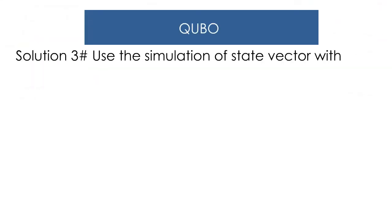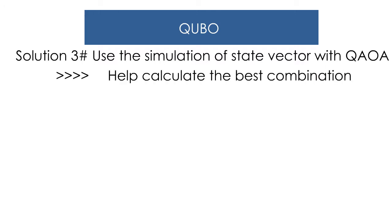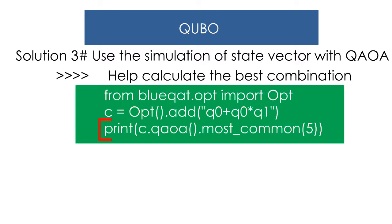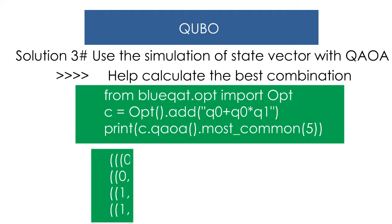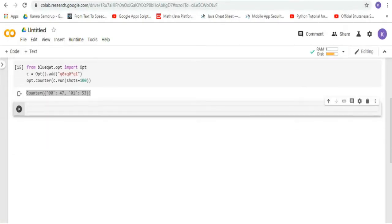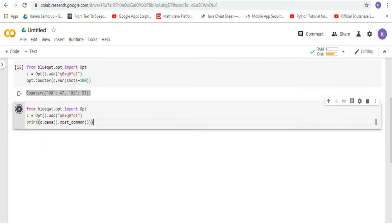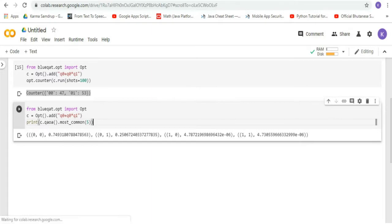Solution 3 is to use the simulation of the state vector with the QAOA algorithm. The Quantum Approximate Optimization Algorithm can help calculate the best combination from many possibilities, so we solve this with the QAOA algorithm. When we run this in Google Colab, we'll get the same output. Let's try it out — run this. We can see that we have the same output.